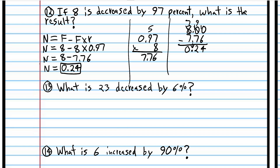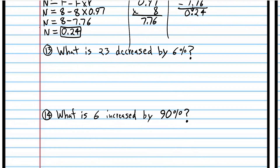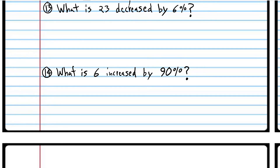If we decreased by 100%, we would go from 8 to 0, because 100% means everything — 100 out of 100. Because 97% is so close to 100%, the result almost went down to 0. Try number 13 on your own, and when you come back, we'll do it together.